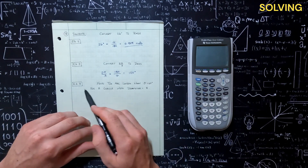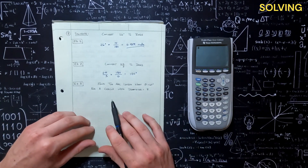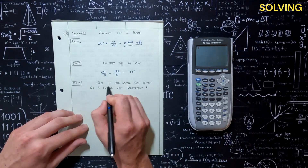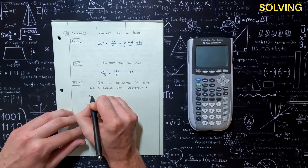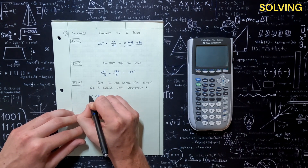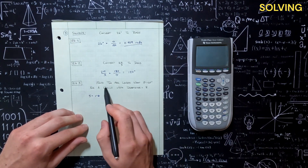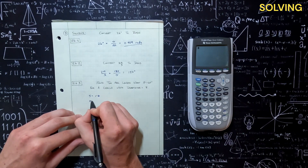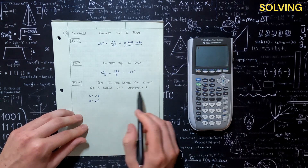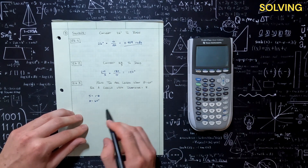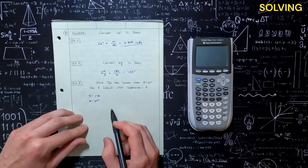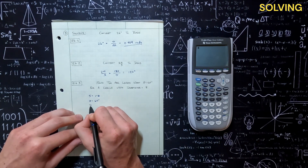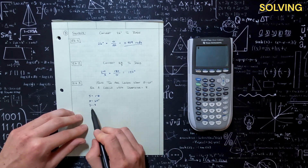Moving on to example 3: let's say we want to find arc length. So arc length — S equals R times theta. Find the arc length when theta equals 60 degrees, for a circle with diameter 8. So D equals 8. We know diameter is just 2 times radius, so 8 equals 2R, and dividing each side by 2 gives us R equals 4.